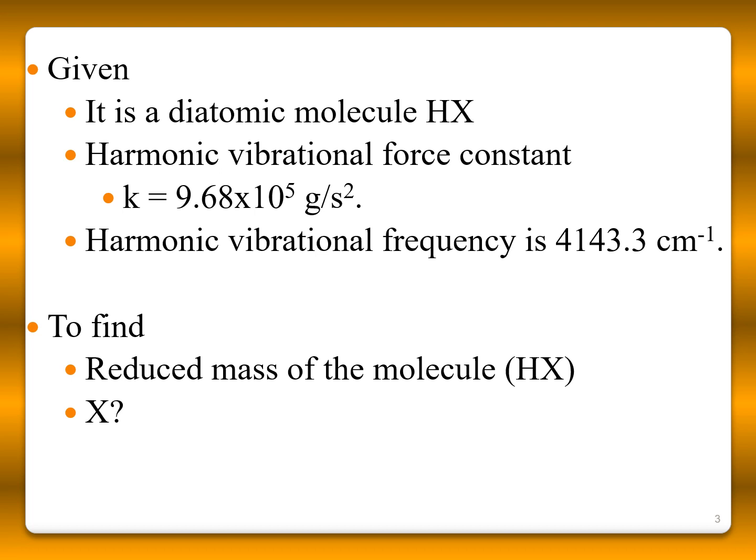From the problem, it is given the molecule is a diatomic molecule HX. Hydrogen is given, X is unknown, and also the harmonic vibrational force constant is 9.68 times 10 to the power 5 grams per second squared, and the harmonic vibrational frequency is 4143.3 centimeter inverse. Now, we have to find out the reduced mass of the molecule and also what is X.